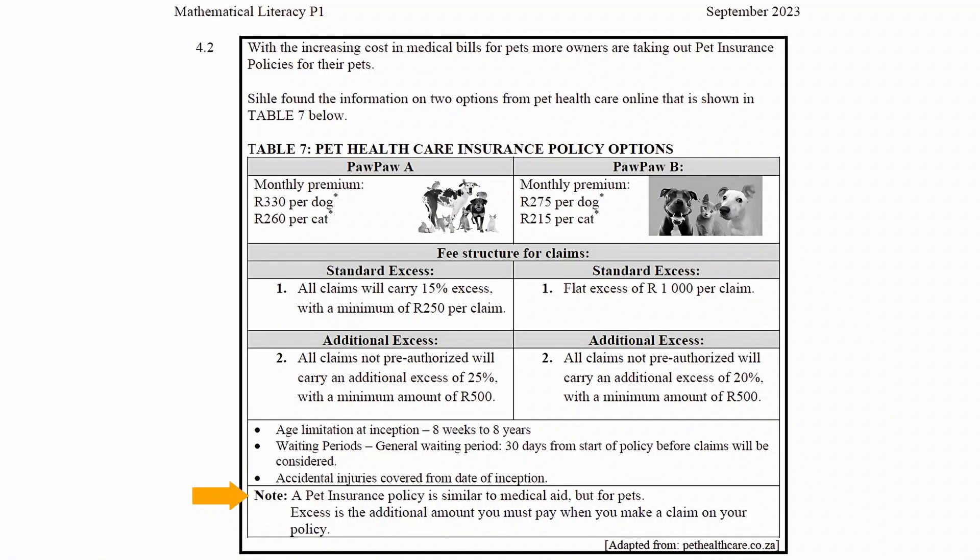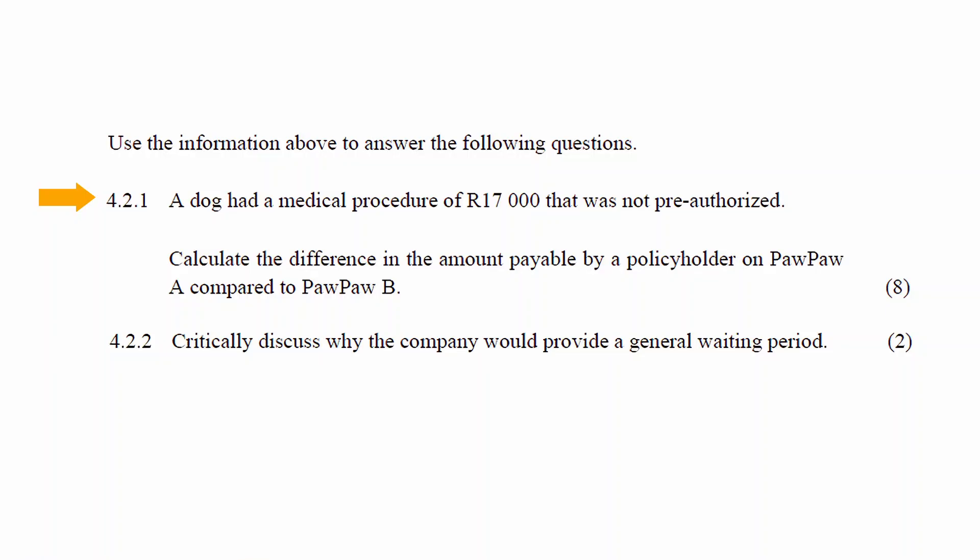An excess is an additional amount that must be paid when you make a claim on your policy. In question 4.2.1, a dog had a medical procedure of 17,000 rand that was not pre-authorized. You have to calculate the difference in the amount payable by a policyholder on Paw Paw A compared to Paw Paw B.